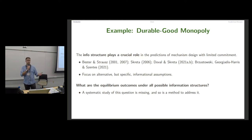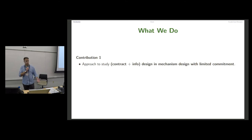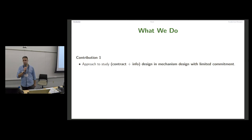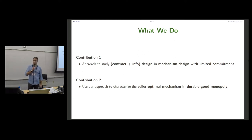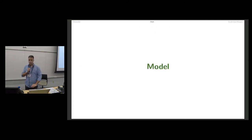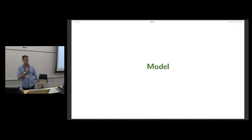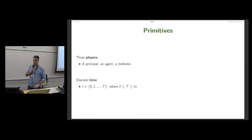A systematic study of this question is missing, and so is a method to address it. Our first contribution is to provide an approach to study contract and information design in mechanism design problems with limited commitment. Our second contribution is to use our approach to characterize the seller-optimal mechanism in the durable good monopoly application.